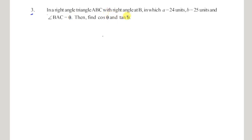Let us observe our question. In a right angle triangle ABC with right angle at B, let us assume it is a right angle triangle ABC where angle B is 90 degrees, and small a is 24 units and small b is 25 units.